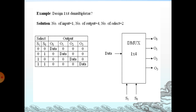This is the logic diagram for the demultiplexer — 1-to-4 demultiplexer. Here S0 and S1 are the selection line inputs, and data is the only one data input. S0 and S1 are the two selection lines, and O0, O1, O2, O3 are the outputs.